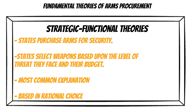Strategic functional approaches to arms procurement behavior use rational choice theory to basically say that the only reason states purchase arms is because they face some sort of threat — they're purchasing arms for the security of the state. But it's not just that they purchase arms based on security; they also select weapons based upon the level of threat they face and their budget. If you feel threatened, you go buy a gun, but you're not going to buy the most expensive one — you'll buy one well within your budget.